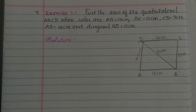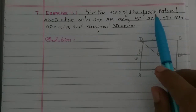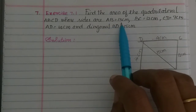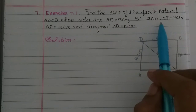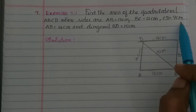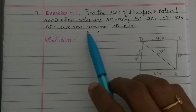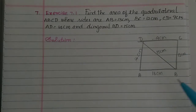Hi students, in this video exercise 7.1, we need to find the area of the quadrilateral ABCD, whose sides are AB equal to 13 cm, BC is 12 cm, CD is 9 cm, AD is 14 cm, and diagonal BD is 15 cm.